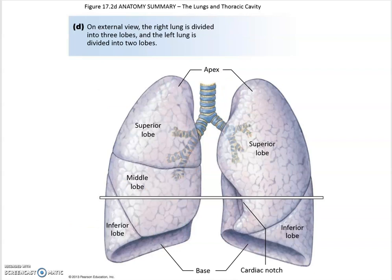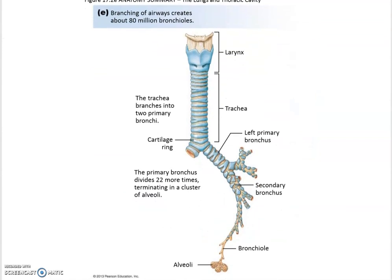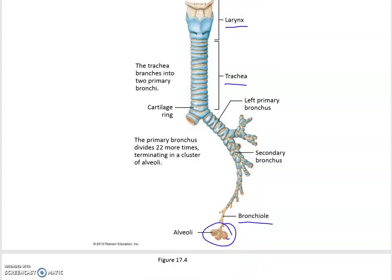Here is an anatomy picture of the lungs and thoracic cavity, showing the lobes. We can see the larynx and trachea as part of the upper respiratory tract, branching into the main bronchial tree with primary and secondary bronchi and then bronchioles, and finally arriving at the alveoli where the actual gas exchange takes place.